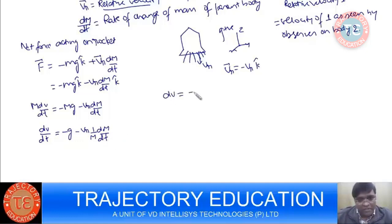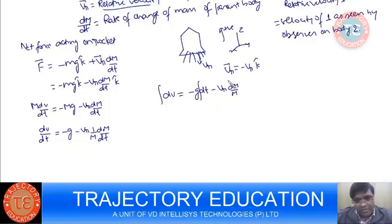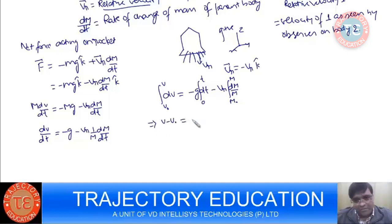This can be written as: dv = minus g·dt minus Vr·dm/M. Integrating both sides, with initial conditions at t=0: velocity V0 and mass M0, and at time t: velocity V and mass M, we get: V minus V0 = minus g·t minus Vr·log(M/M0). Therefore: V = V0 minus g·t plus Vr·log(M0/M).